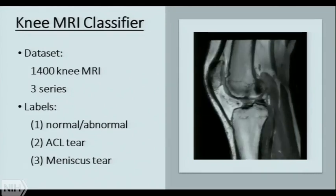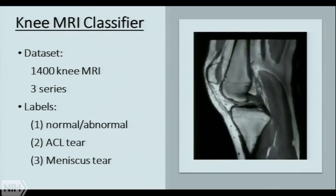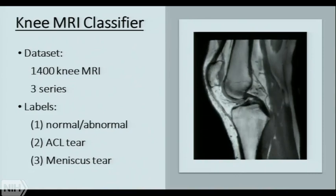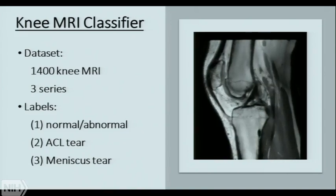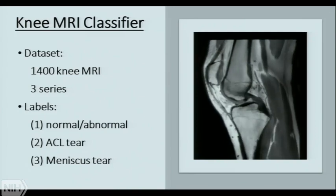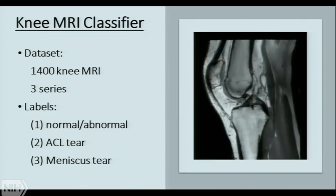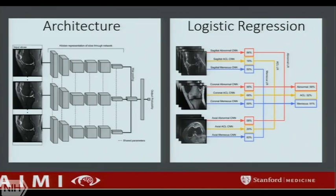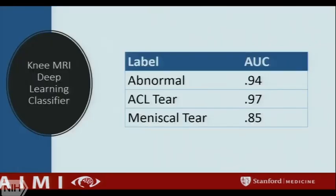We developed an EMRI classifier earlier this year based on 1,400 EMRIs that we hand-labeled based on reports. We labeled them normal/abnormal for a detection task, and ACL tear and meniscal tear for classification tasks. We extracted three series per exam, and had a holdout test set of 120 EMRIs labeled by a panel of subspecialist MSK radiologists who also had access to the EMR and PACS — a really nice ground truth set. Our architecture was a 2D CNN that transforms each image in parallel into feature maps, averages those into multi-dimensional vectors passed through a fully connected layer to create a probability. With three series and three labels, we had nine CNNs, so we used logistic regression to combine those nine decisions into three best-weighted decisions.